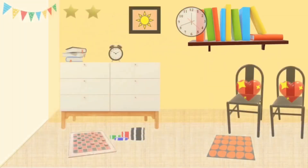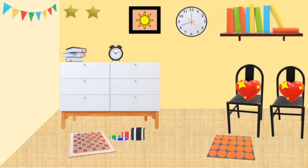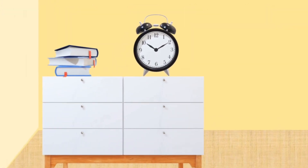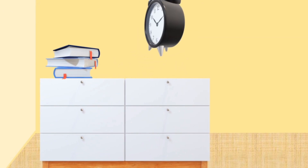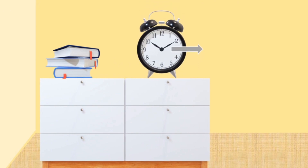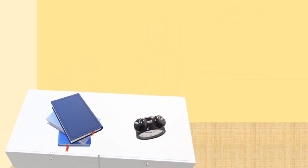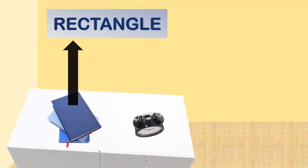These are books. Their shape is rectangular. This clock is circular in shape — the shape is circle. These books are rectangular in shape — the shape is rectangle.